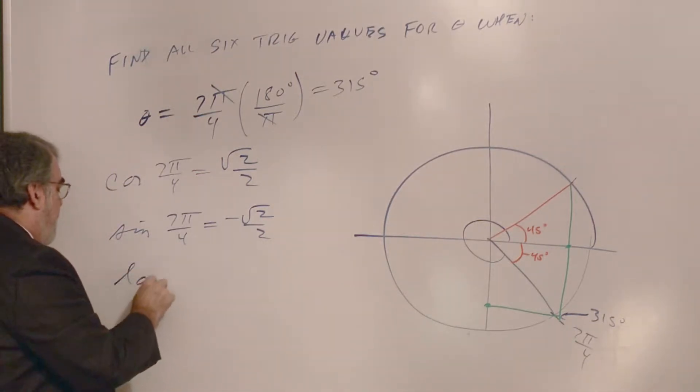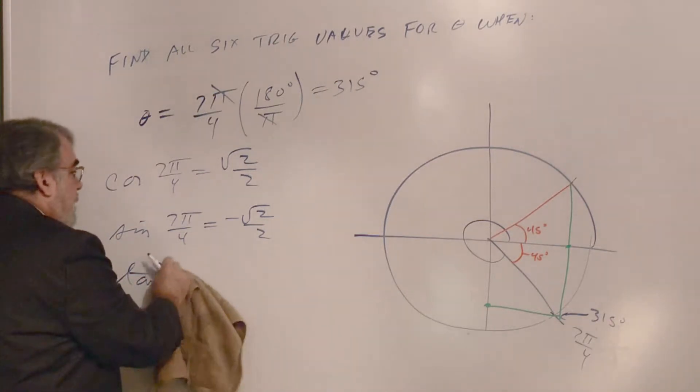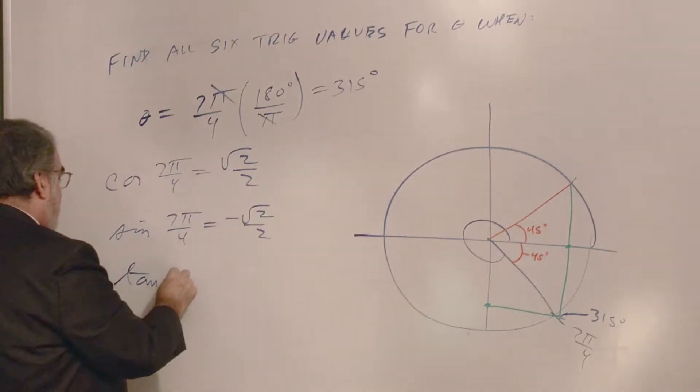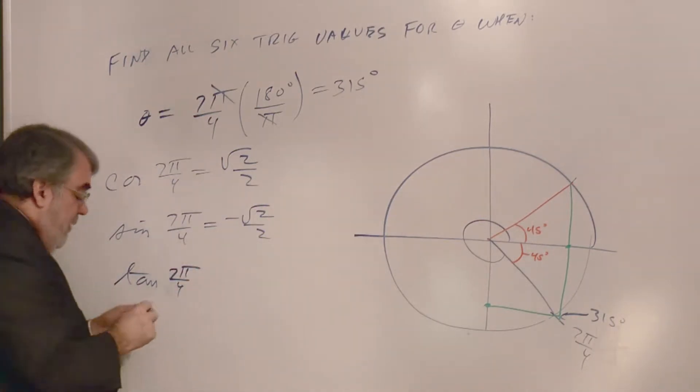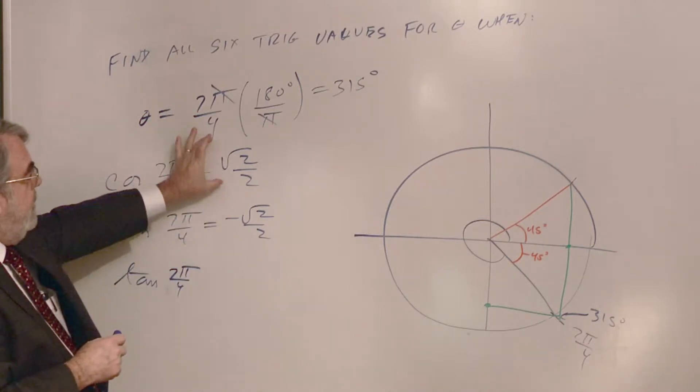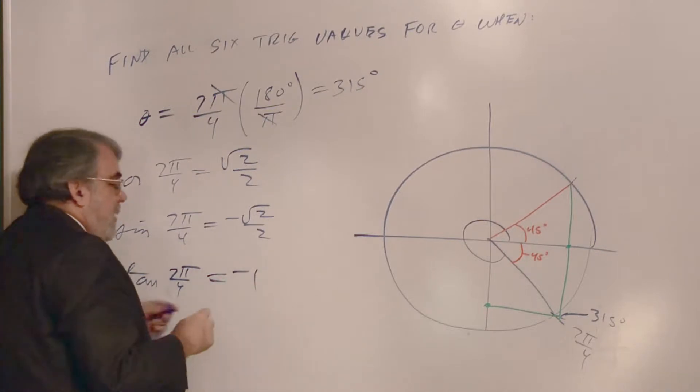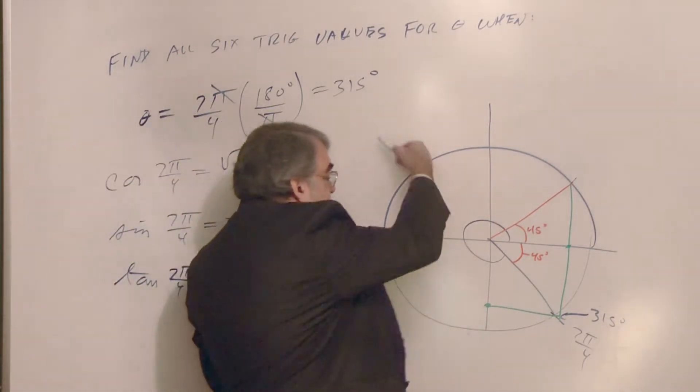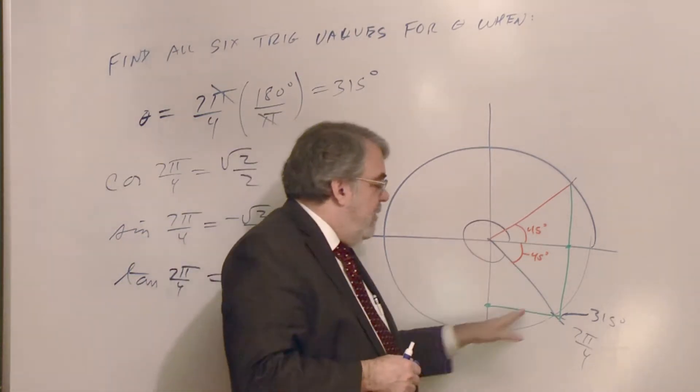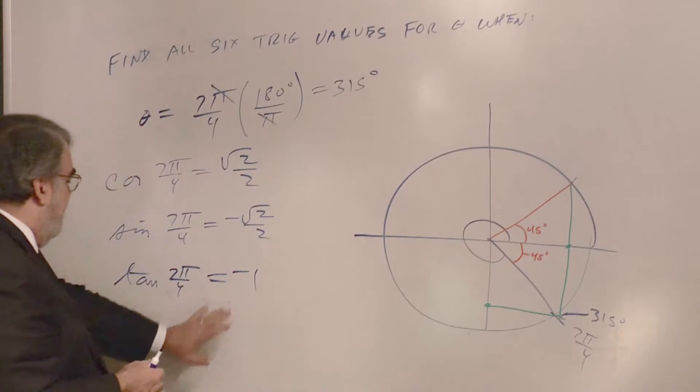What's the tangent? Tangent 7π over 4. Well, tangent is sine divided by cosine. This number divided by that number is going to be minus 1. But you can see it here because this line has a slope of down 1 over 1. It's a slope of negative 1. That's the tangent, minus 1.